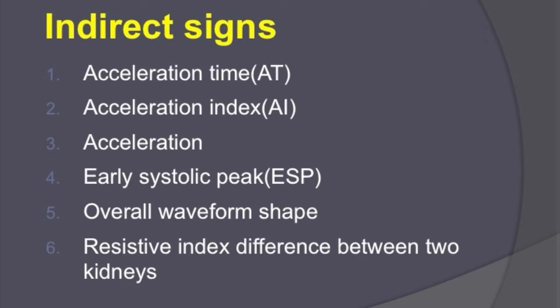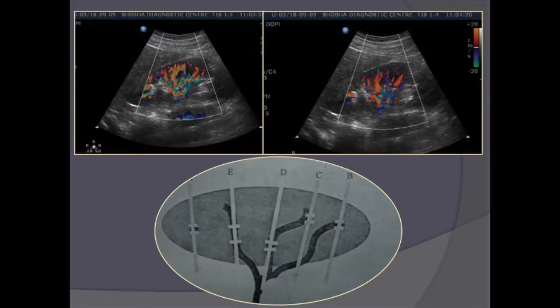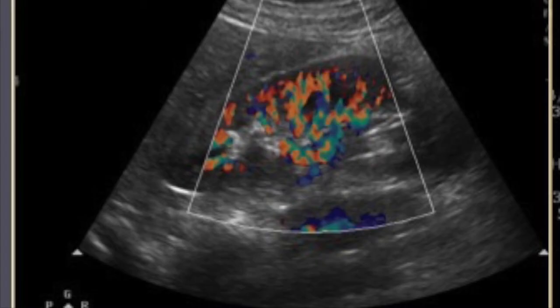Right now we will concentrate on getting a good pulse Doppler examination, obtaining a good spectrum for evaluation, and the interpretation of indirect signs and how to do that. When you start the interrogation of the intraparenchymal branches, you should reduce your PRF to the point that the artery starts aliasing.